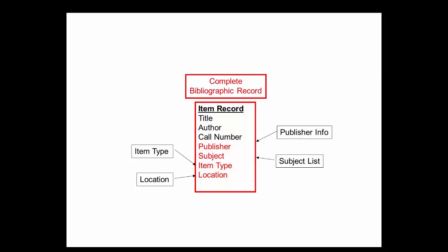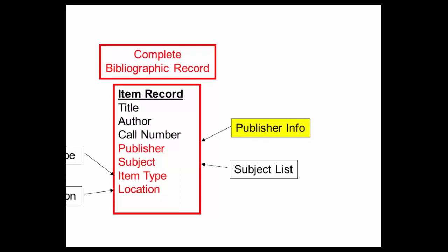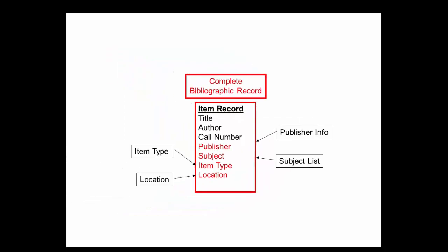Each publisher is typed once in a publisher info table. When the cataloger is creating a record for a newly purchased item, she links to the publisher table, finds the publisher from the list, and selects it. If she receives a book from a brand new publisher, she will enter that name in the publisher table and then link to it. The advantages of typing the publisher name only once and then linking to it: it saves typing, increases accuracy by eliminating repetitive data entry, and promotes consistency. Some may spell out a word such as 'company,' whereas others might abbreviate it as 'CO.'